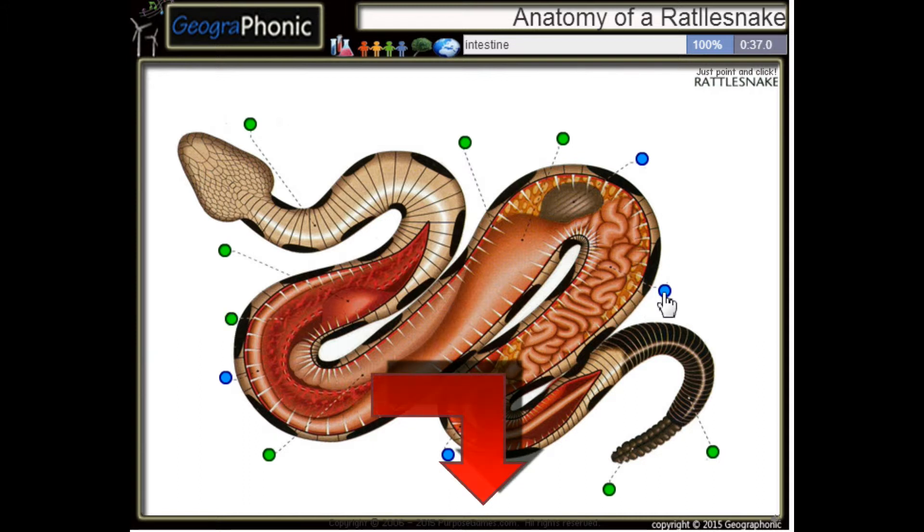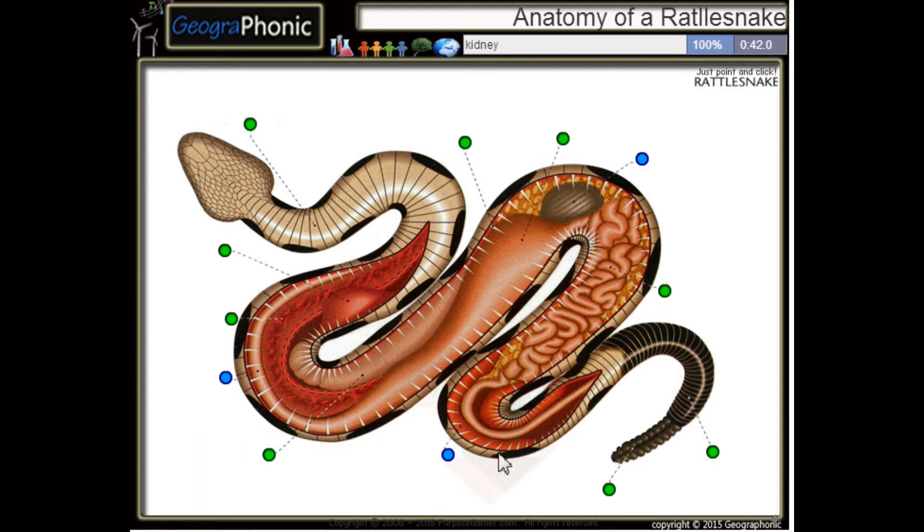This is the intestine. This is the kidney of the snake. This is the esophagus. And this is the gallbladder.